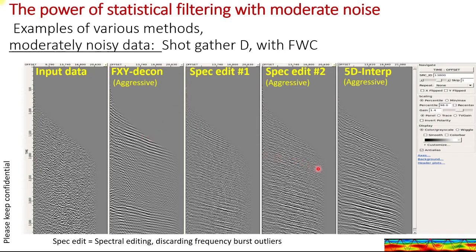A lot of these events are consistent, and you can see these last two are better. FXYDCOM is really a 3D statistical filtering — it kind of works, but it's not great.